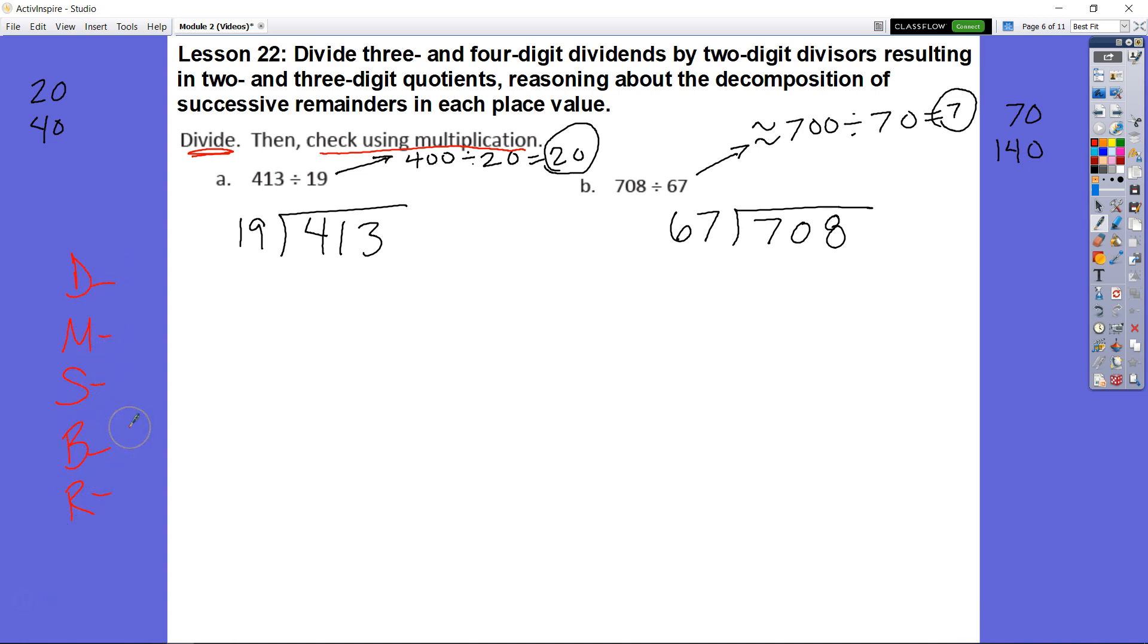Step 1. 4 divided by 19. I can't divide 4 hundreds by 19 without regrouping. So I say that's going to be 0, 0 times 19 is 0, subtract 4 minus 0 is 4 and then I'm going to bring down my 1.